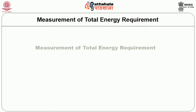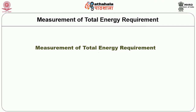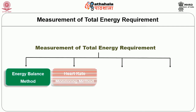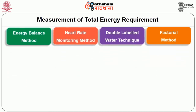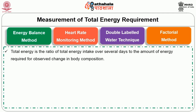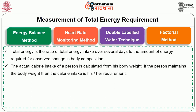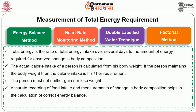Total energy requirement is measured using the following methods: energy balance method, heart rate monitoring method, doubly labelled water technique, and factorial method. Energy balance method: total energy is the ratio of total energy intake over several days to the amount of energy required for observed change in body composition. The actual calorie intake is calculated from body weight; if the person maintains body weight, the calorie intake equals their requirement. Accurate recording of food intake and measurements of change in body composition help calculate the correct energy balance.